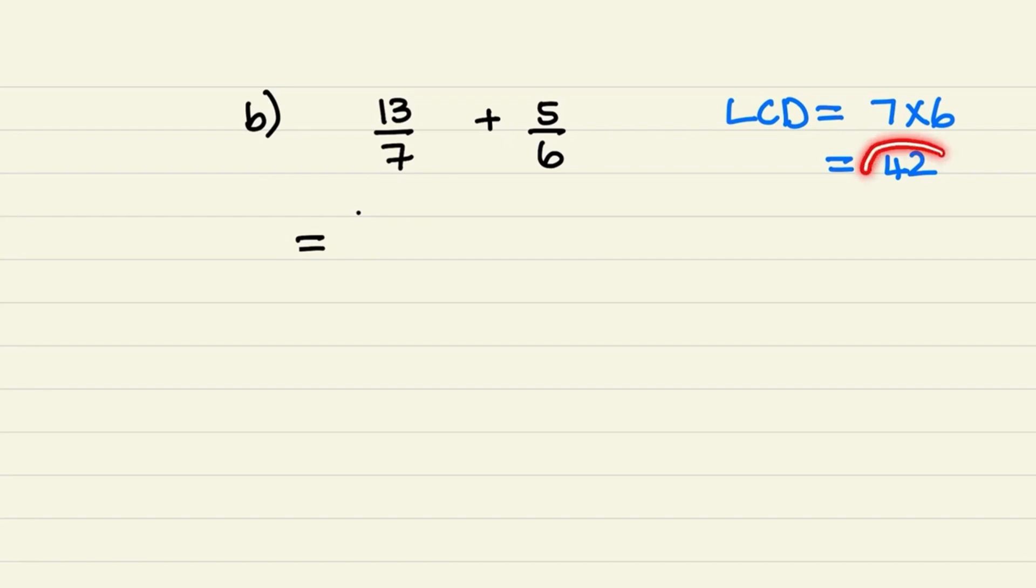So we will make the denominator of each of these fractions 42. So for the first fraction, I have 13 over 7. And to make the denominator 42, I multiply 7 by 6. And what I do in the denominator, I do in the numerator.